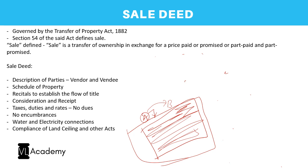Sale deed is governed by the Transfer of Property Act 1882. It is a conveyance, not a contract—meaning rights and obligations are transferred. A deed records something that has already happened: the sale has occurred, the title transfer has happened, and ownership has been transferred. The document records this completed transaction.